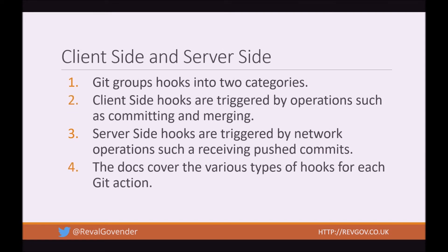Git groups hooks into two categories: client side and server side. Client side hooks are triggered by operations such as committing and merging. Server side hooks are triggered by network operations such as receiving pushed commits. The docs cover the various types of hooks for each Git action.